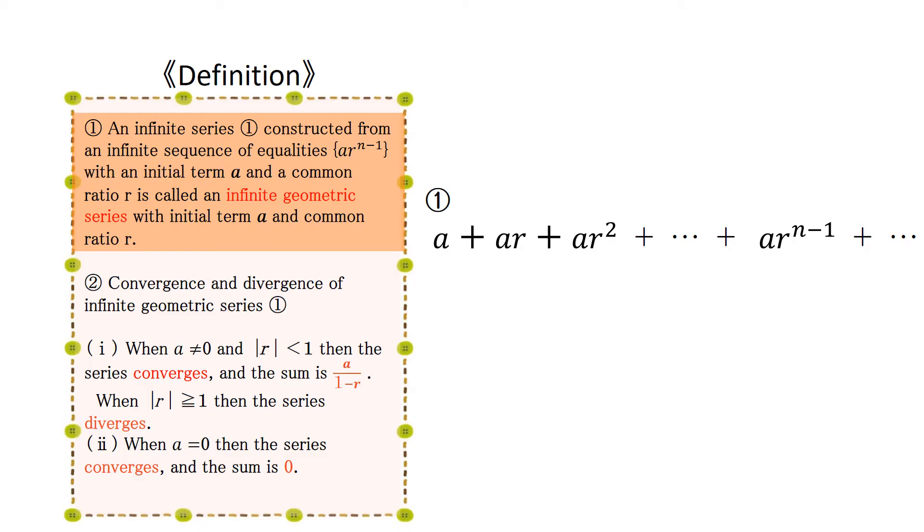Infinite series, such as the one shown on the right, made from an infinite sequence of equalities a·r^(n-1) with an initial term a and a common ratio r, is called an infinite geometric series with initial term a and common ratio r.